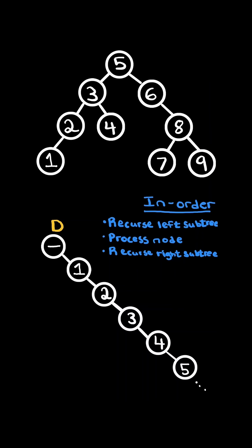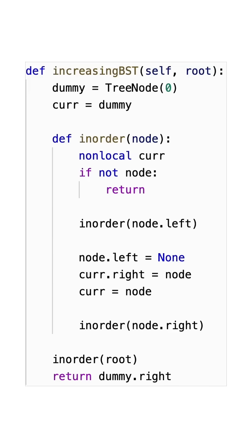At the very end of the inorder traversal, we would have created a tree, and we simply just need to return dummy dot right. And here's the code to do so.